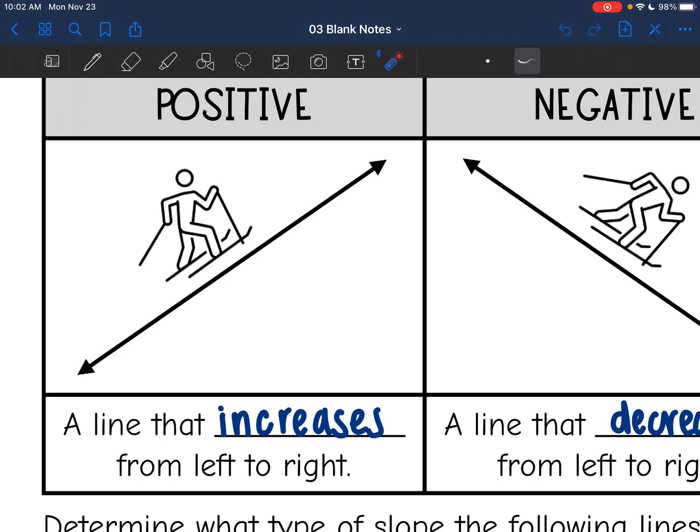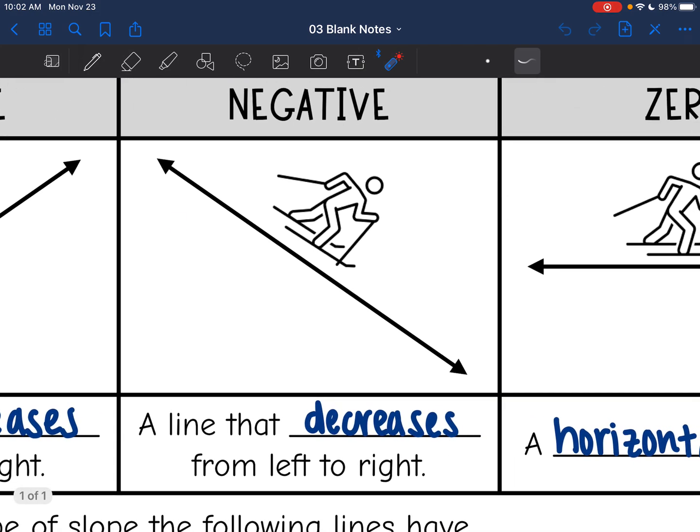The first one is a positive line. This is basically just a line that's going up. It increases from left to right. And then the next type of line is a negative line. It is going down. Basically it decreases from left to right.